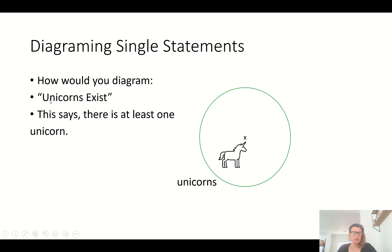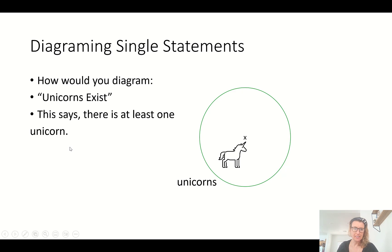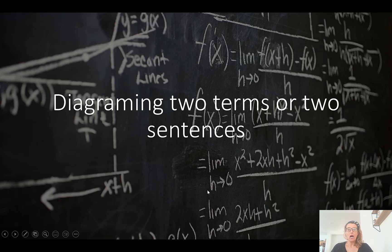So how would you diagram the statement 'unicorns exist'? Here's the class of all things that are unicorns — the set of all unicorns in the actual world. You put a little X in there. There's a unicorn. This basically says if there's an X in here, there is at least one unicorn. Unicorns would exist if there is at least one. That's how you diagram it with a little X.